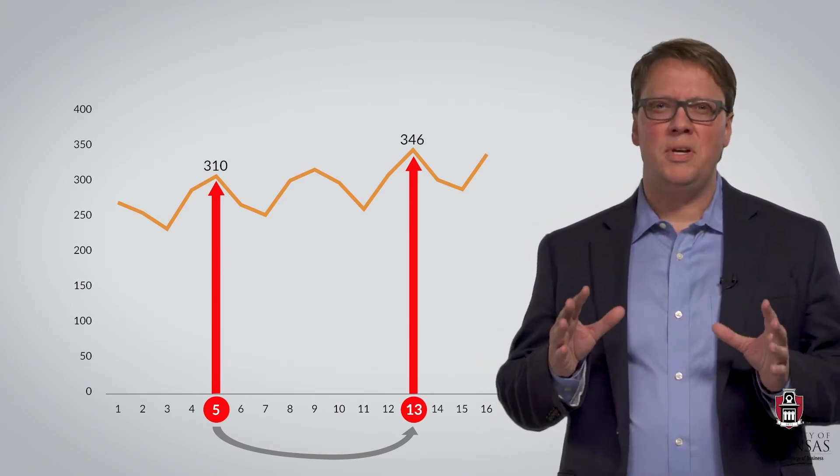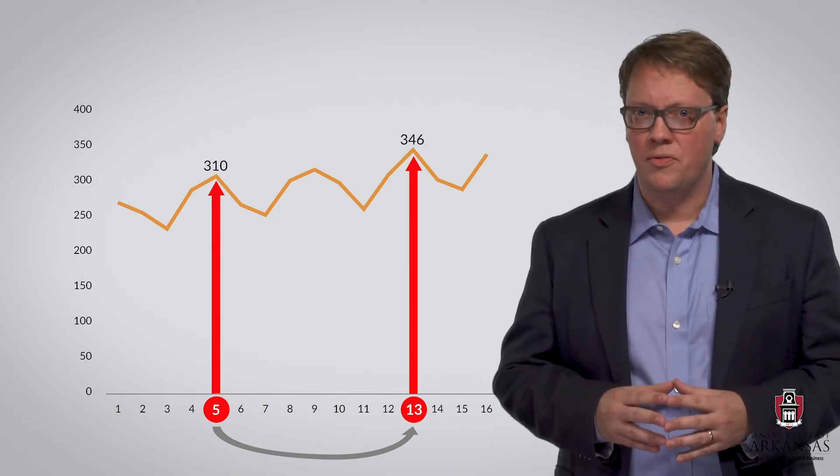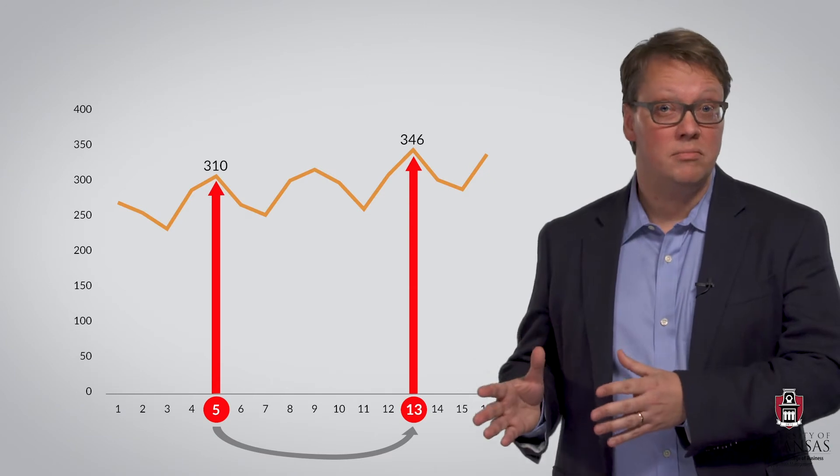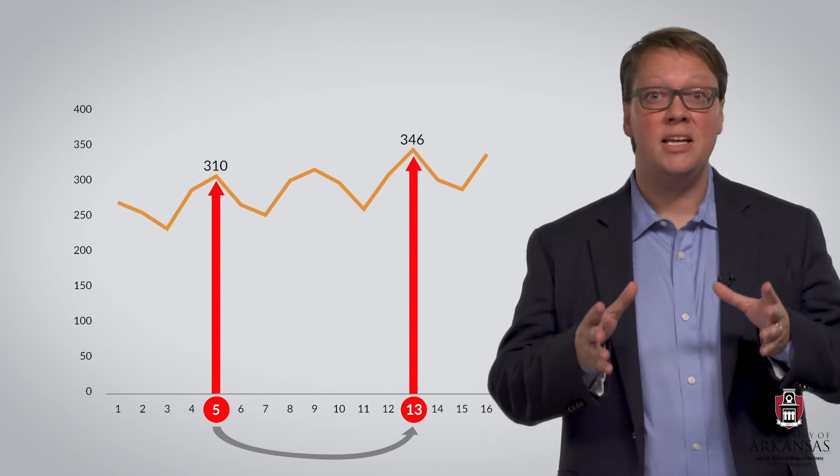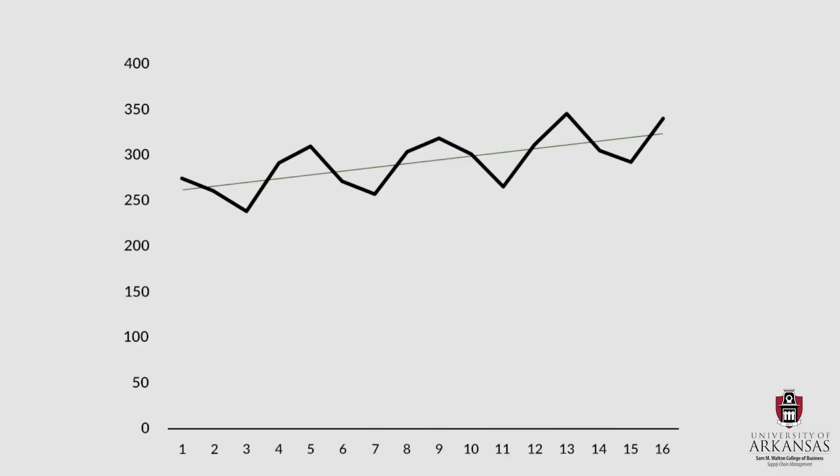What all this means is that we can, at a conceptual level, break down each demand observation into a base level, a trend component, and a seasonal component. Let's take another look at period 5 and visually identify the base level as well as the trend and seasonal components.